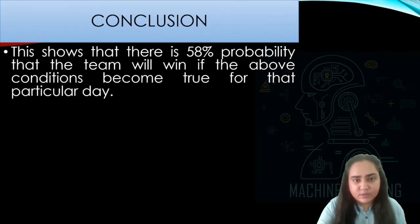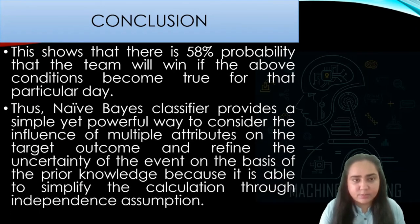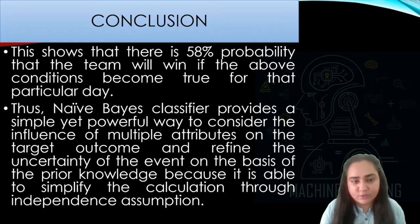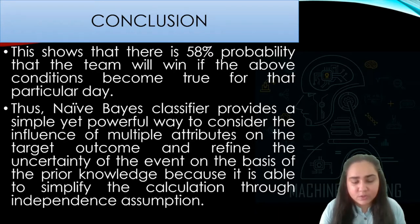So what can we conclude? There is a 58% probability that the team will win. The Naive Bayes classifier provides a simple yet powerful way to consider the influence of multiple attributes on the target outcome and refine the uncertainty of an event based on prior knowledge, by simplifying calculation through the independence assumption.